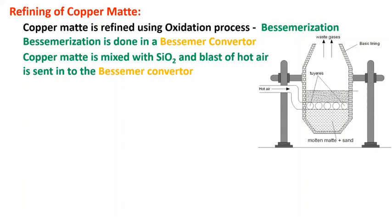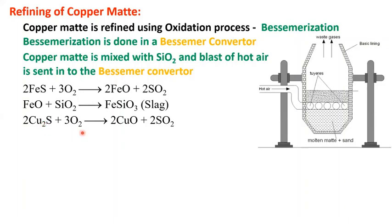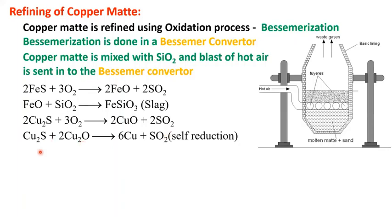In the Bessemer converter, copper matte is mixed with silica and a blast of hot air is sent through the tuyères. Ferrous sulfide (impurity) is oxidized to ferrous oxide and sulfur dioxide; ferrous oxide reacts with silica to form slag. Cuprous sulfide is oxidized to cuprous oxide and sulfur dioxide. Then self-reduction takes place: cuprous oxide and cuprous sulfide react together to produce copper metal.